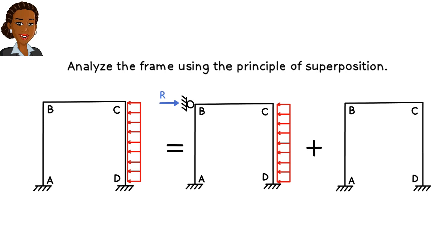To satisfy this loading condition, we take the reaction force at B, change its direction, and place it at the top of this frame. Note how the algebraic sum of these forces satisfies the loading condition in the original frame.